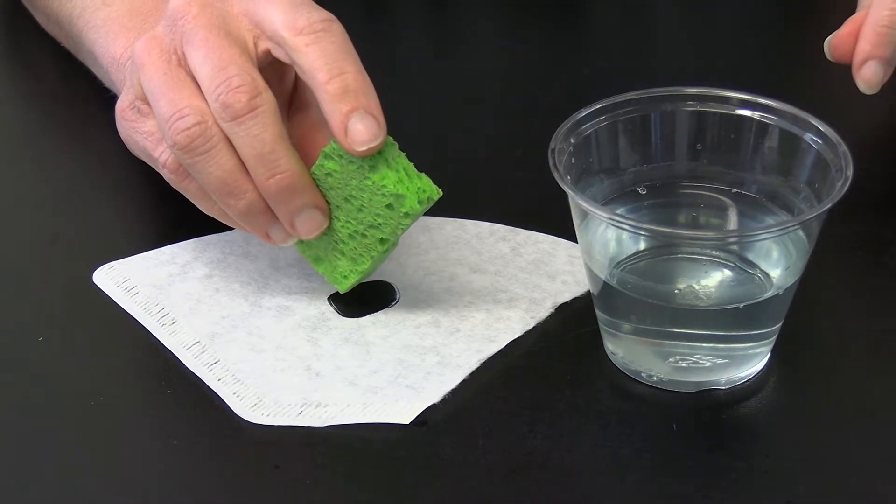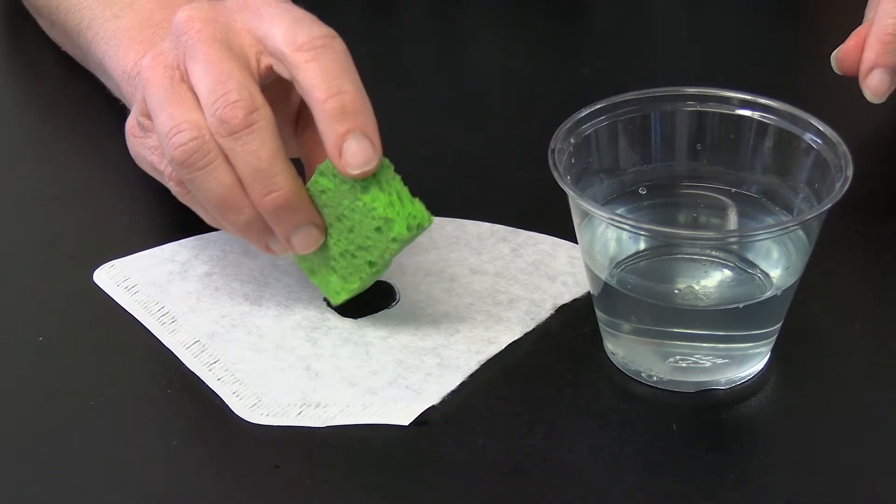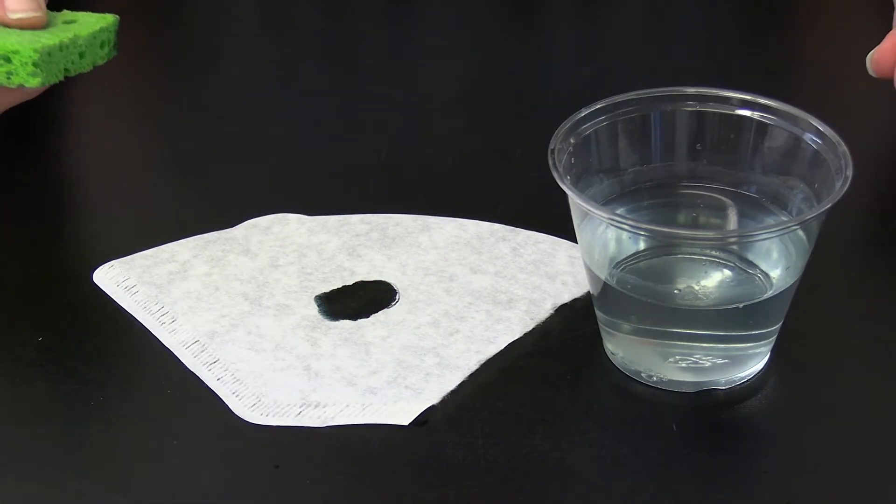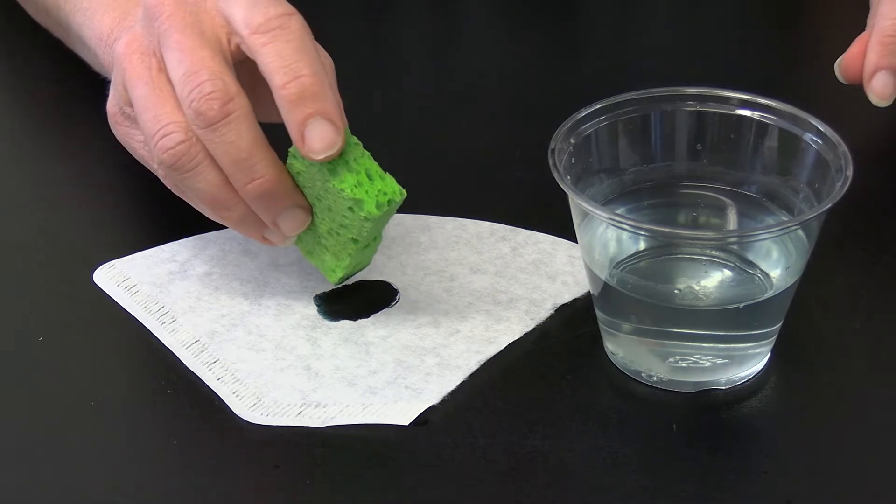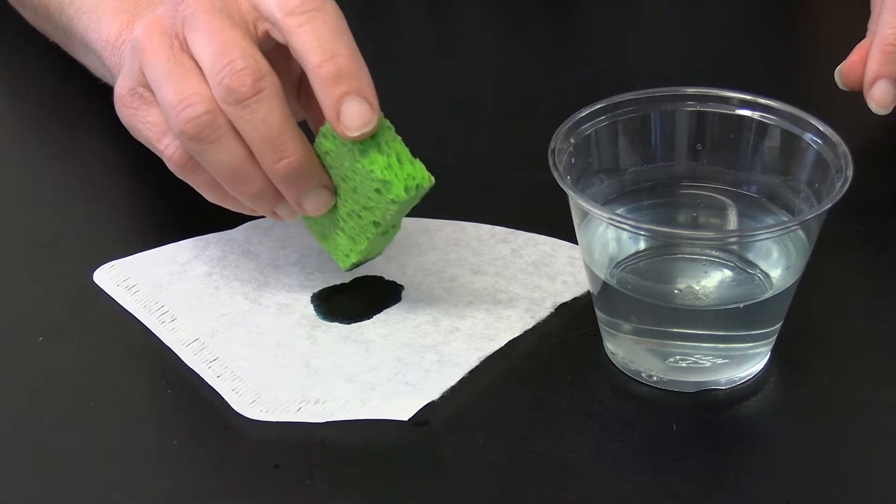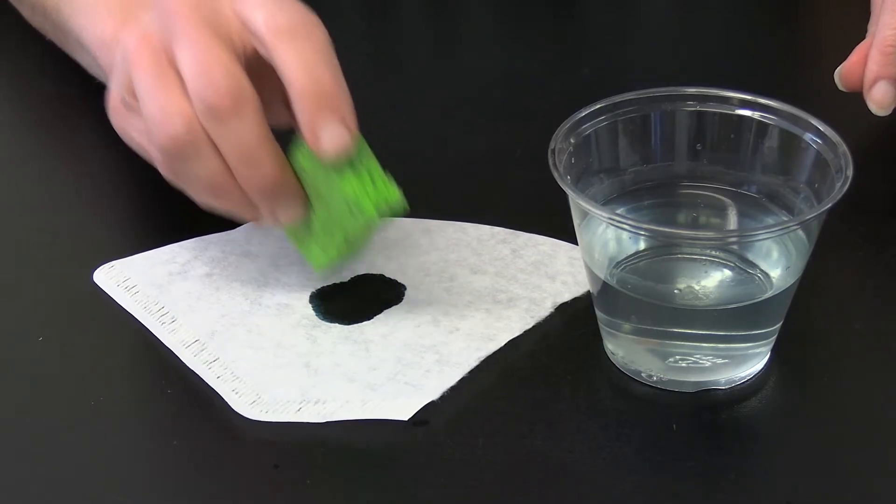Then just touch the sponge to the center of the circle. The water is going to get taken into the paper. It's going to move through the narrow channels in the filter paper. That's the capillary action that we've talked about before. As it moves through those channels, it takes the color molecules with it.